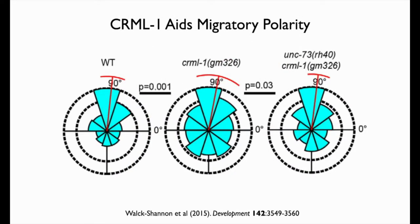Elise looked at CARMIL-1 mutants in combination with UNC-73/TRIO mutants during dorsal intercalation and quantified protrusive activity using rose plots. Wild-type cells show highly polarized protrusions, mostly pointing straight across the dorsal array to the contralateral side. In CARMIL-1 loss-of-function mutants, protrusions form all the way around the periphery — there is still some bias and cells can migrate, but with more difficulty. Introducing an UNC-73 GEF-1 mutant into the CARMIL-1 background partially rescues those polarity defects.